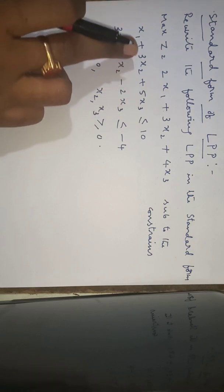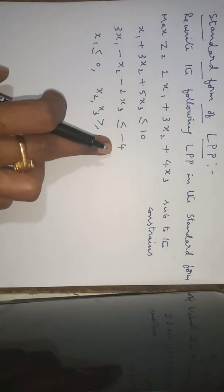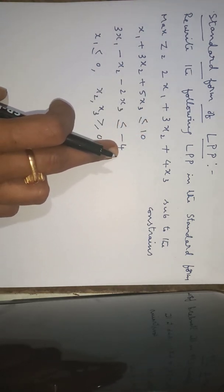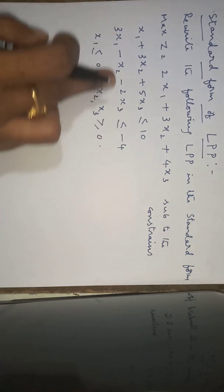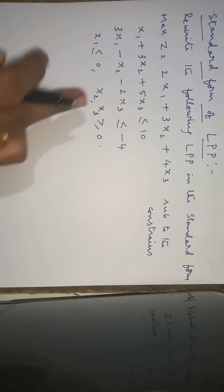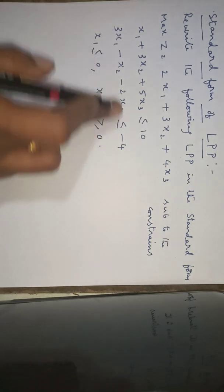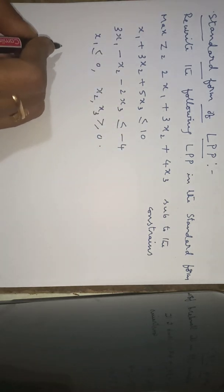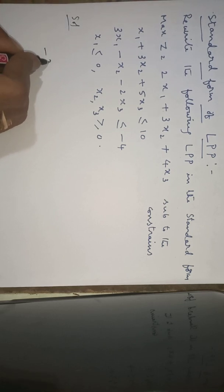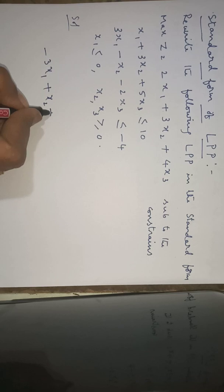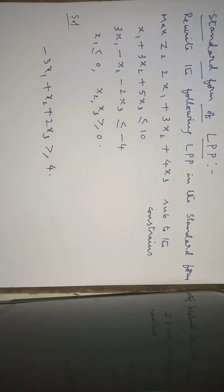The second step is to check the right-hand side of the constraints. If any right-hand side of a constraint is negative, we have to convert it to a positive one by multiplying both sides with minus 1. The second constraint has minus 4 on the right side, so we multiply both sides by minus 1, giving us: minus 3x1 plus x2 plus 2x3 is greater than or equal to plus 4.